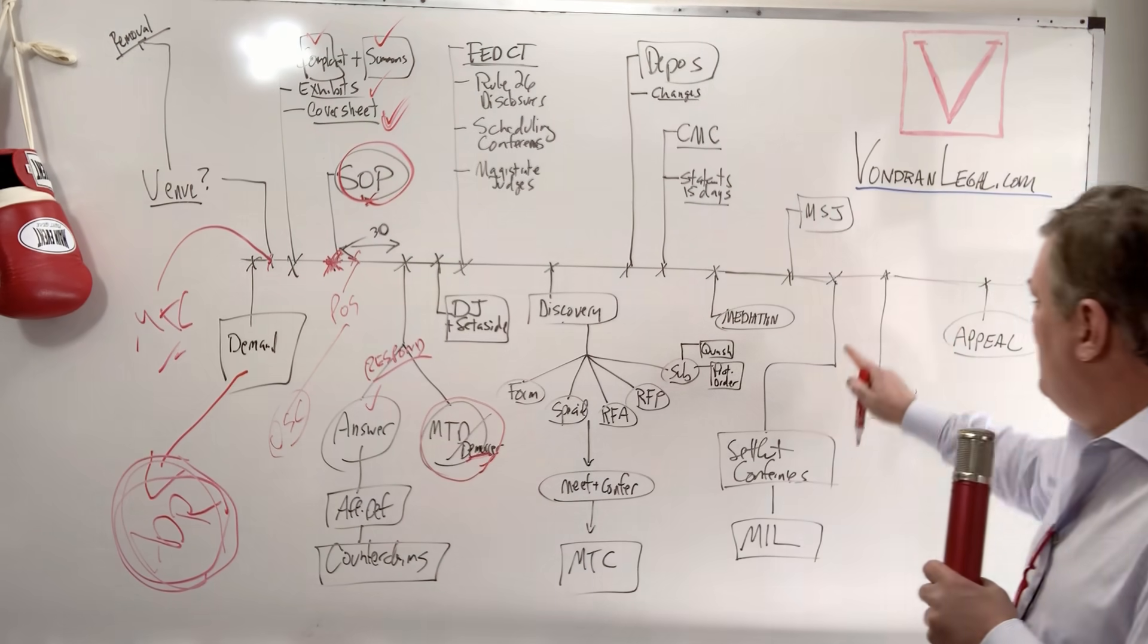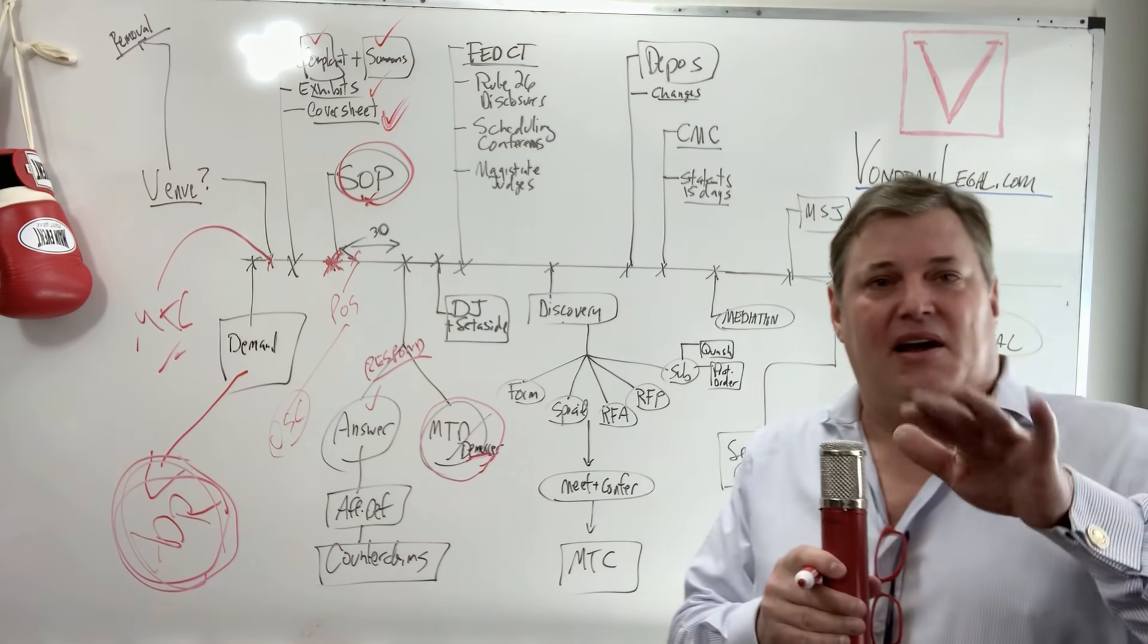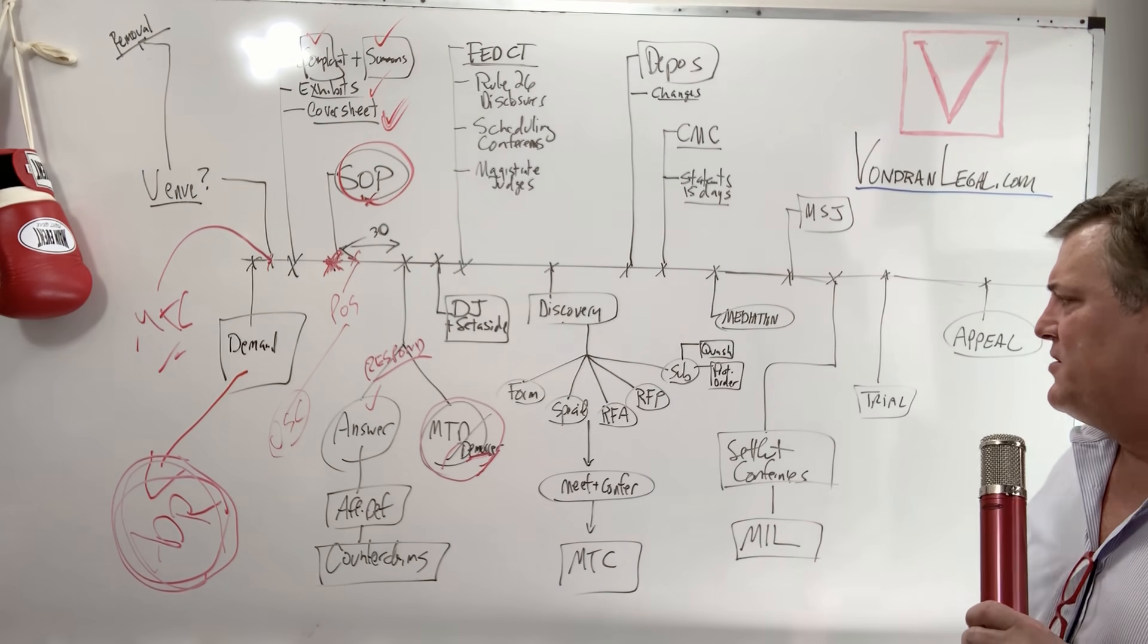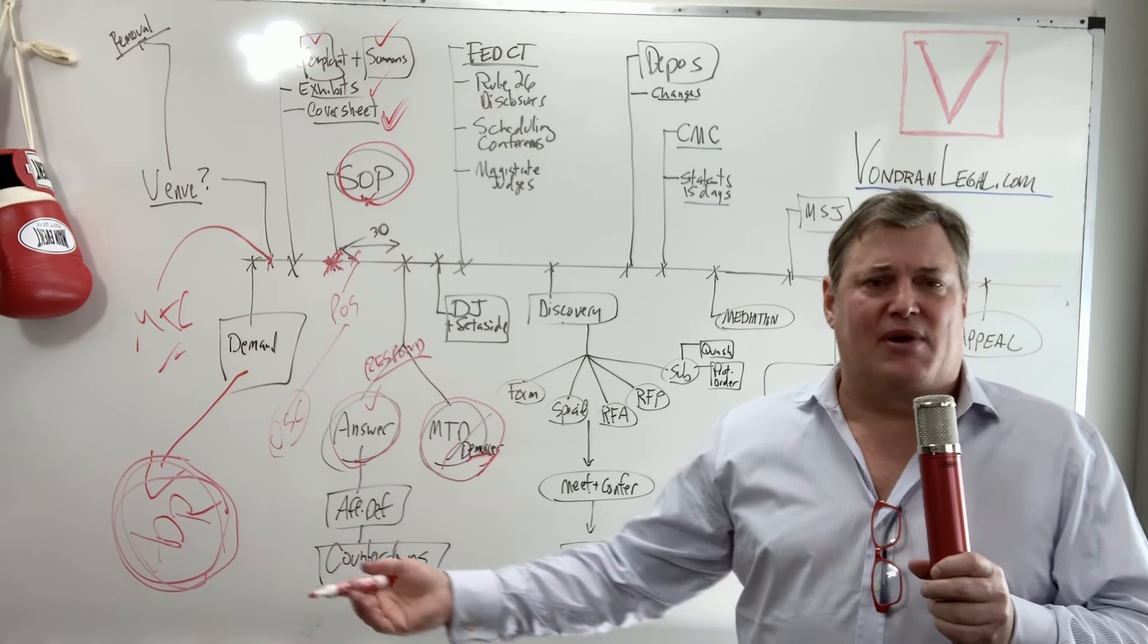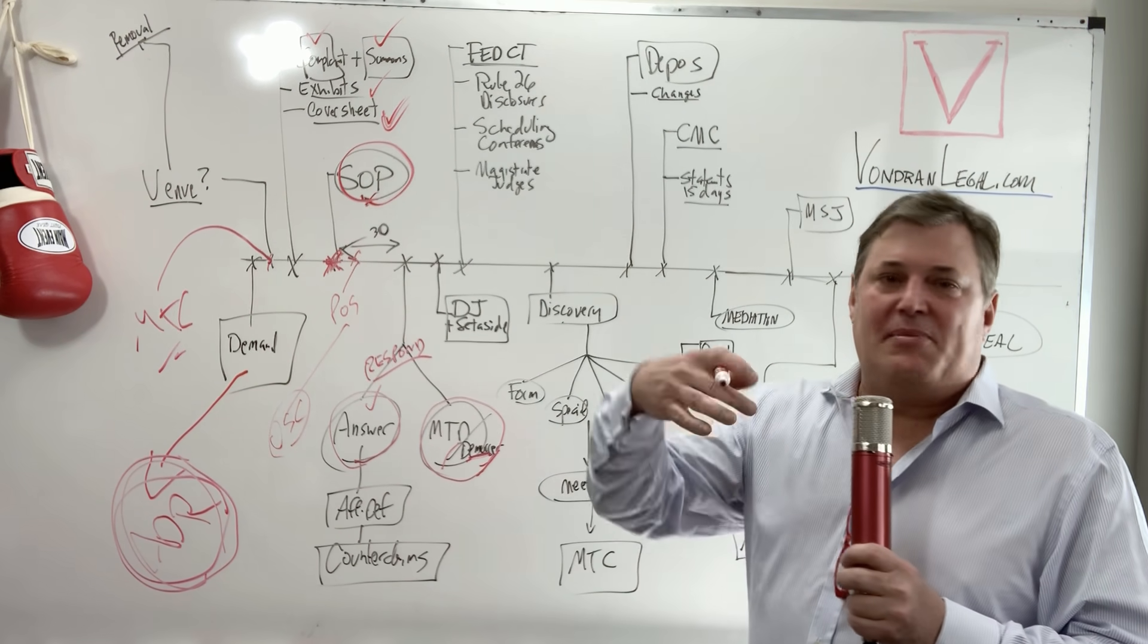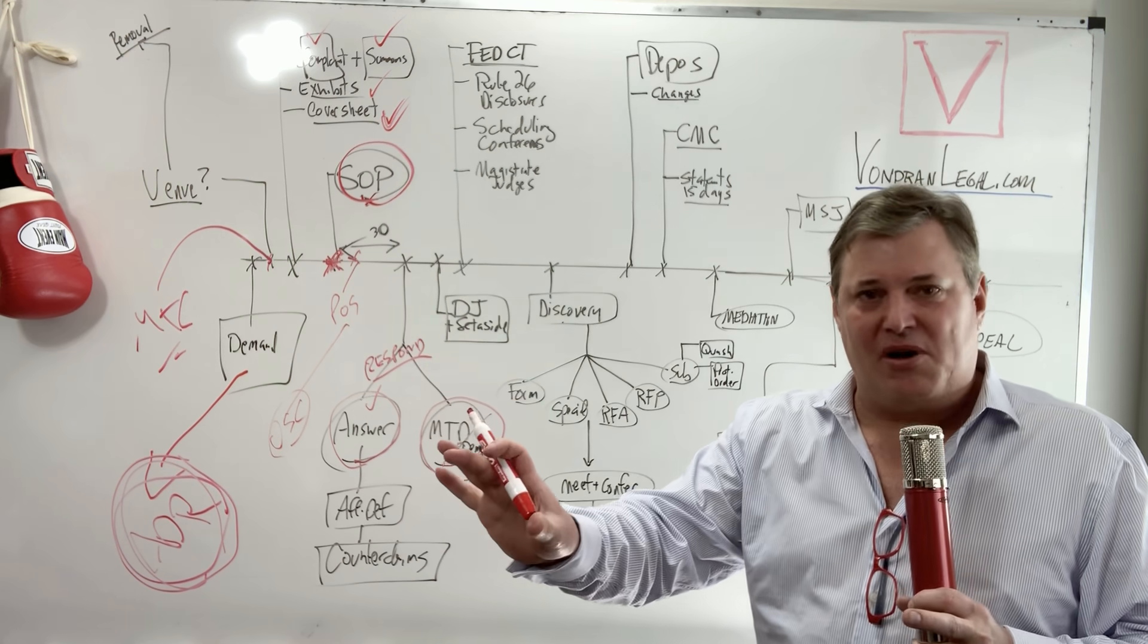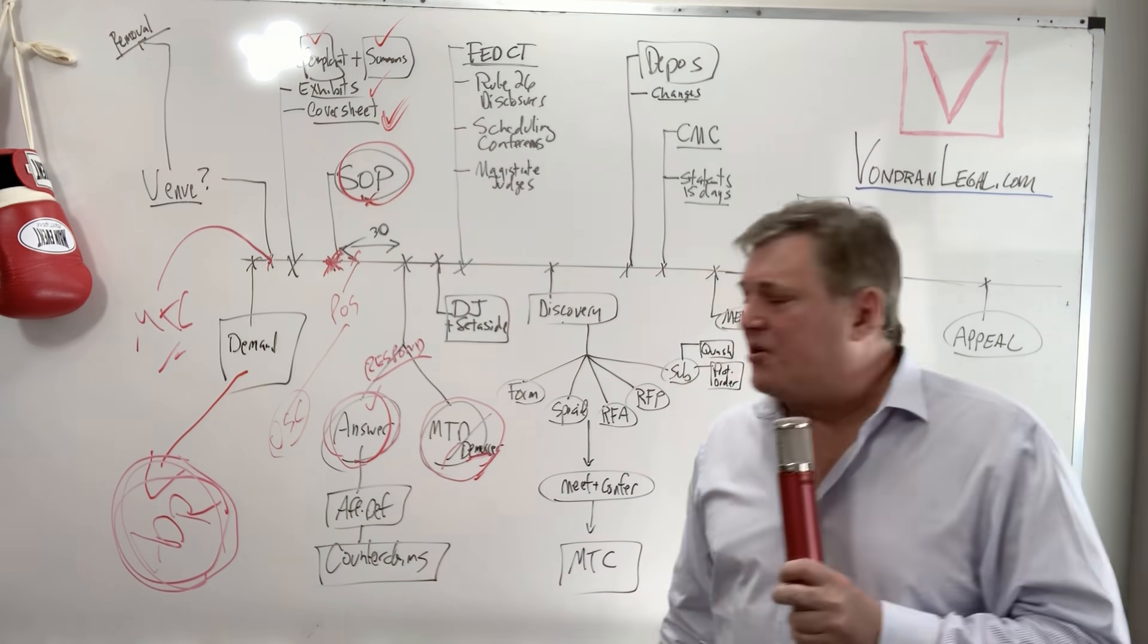And so the demurrer usually challenges defects on the face of the complaint defects on the facial pleading of the complaint. Now it doesn't go to the facts. It's not summary judgment motion, which we'll talk about here. It's going only to the face of the complaint saying on its face, there are defects in the way that this was pled. So again, that's a different video. I think I have videos on these. You're going to have to check. I believe I did those. But let's go back to the answer real quick.